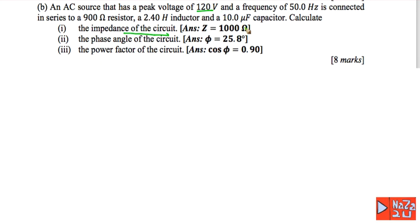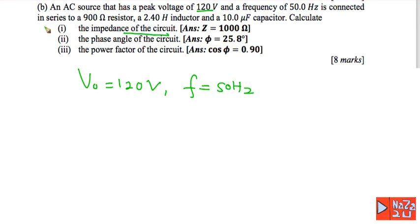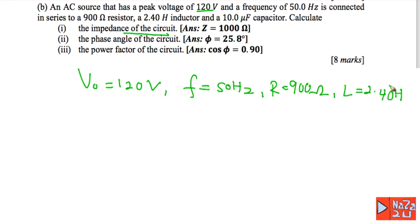Next, question B1: find the impedance of the circuit. We have an AC circuit where V naught equals 120 volts, frequency equals 15 hertz, connected to a series circuit with R equal to 900 ohms, inductor L equal to 2.40 henry, and capacitance C equal to 10 microfarads. This is an RLC circuit.